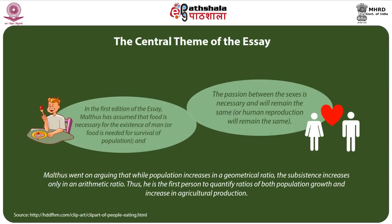What is the central theme of the essay? In the first edition, Malthus assumed that food is necessary for the existence of man and that the passion between the sexes is necessary and will remain the same. After accepting these two natural laws, Malthus argued that while population increases in a geometrical ratio, subsistence increases only in an arithmetic ratio. Thus he was the first person to quantify ratios of both population growth and increase in agricultural production.